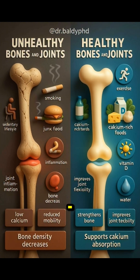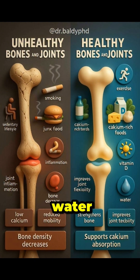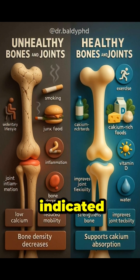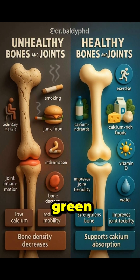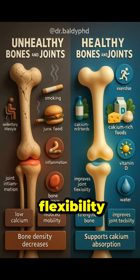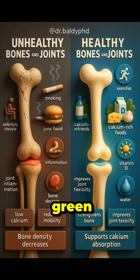Water is represented by a water droplet. Strengthens bone is indicated by a green box with white text. Improves joint flexibility is represented by a green box with white text. Supports calcium absorption is shown as a green box with white text.